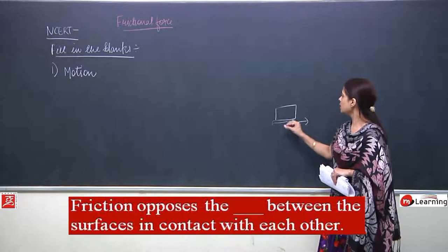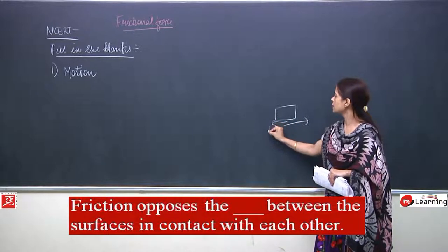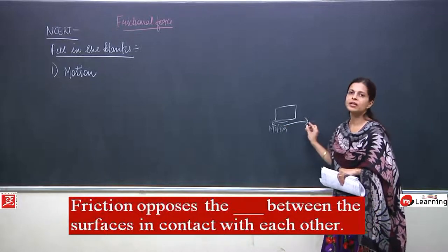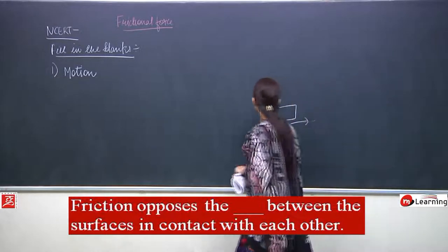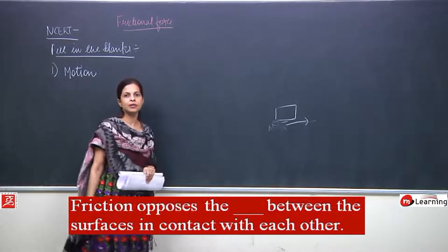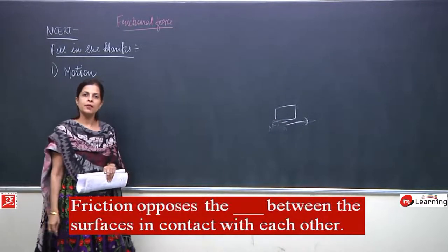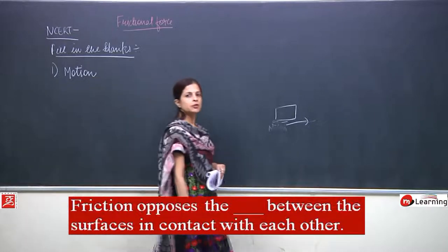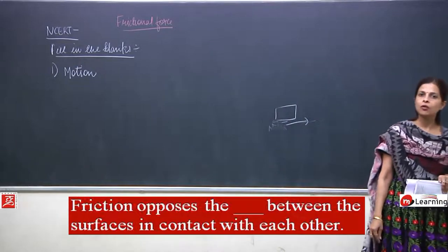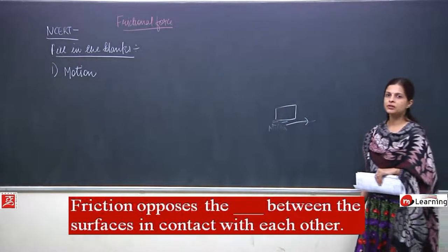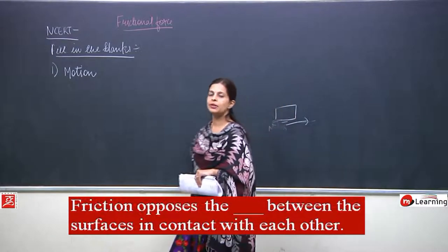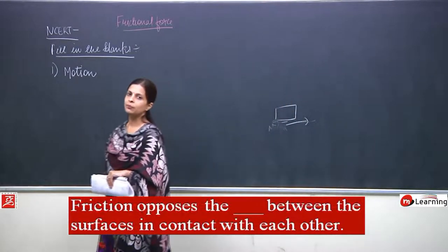If we are trying to move a box in one direction, friction will work in the opposite direction. If we change the direction of motion, the friction also changes direction — motion and friction are always in opposite directions. Friction tends to stop the motion of the body.